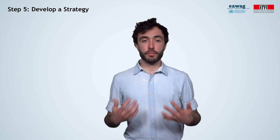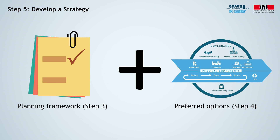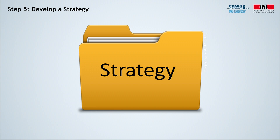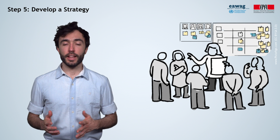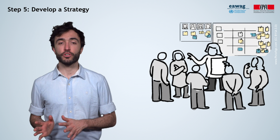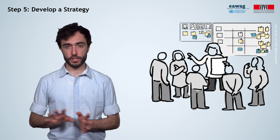In step 5, we combine the planning framework from step 3 and the preferred options from step 4 to come up with the most appropriate strategy for a municipal solid waste management system, with a time span of 15 years. This strategy should focus on the high-level issues, leaving the consideration of more detailed aspects of action planning to step 6.